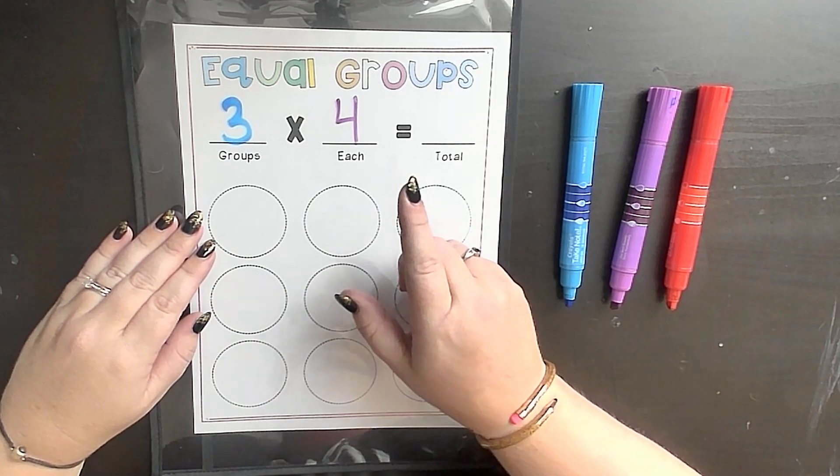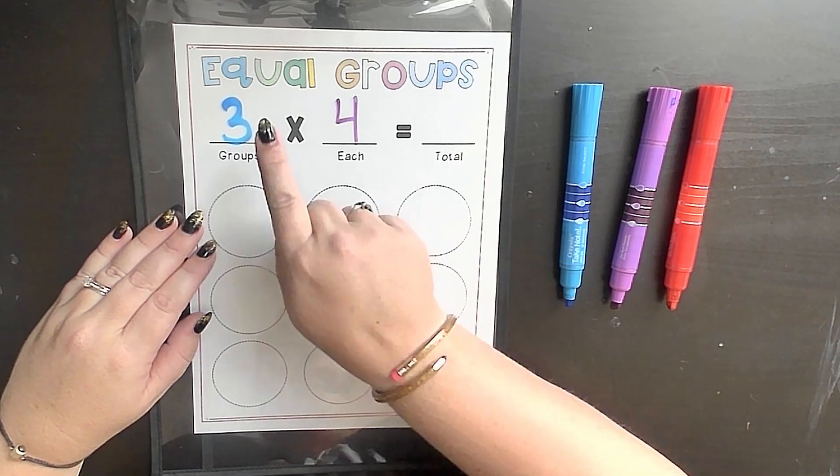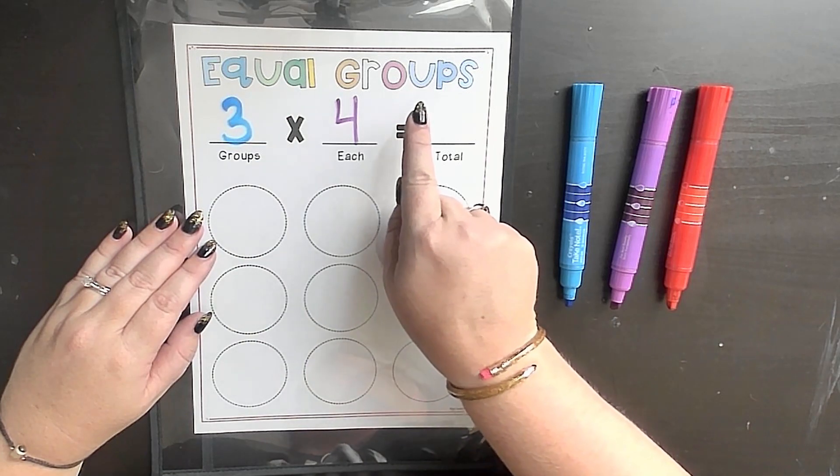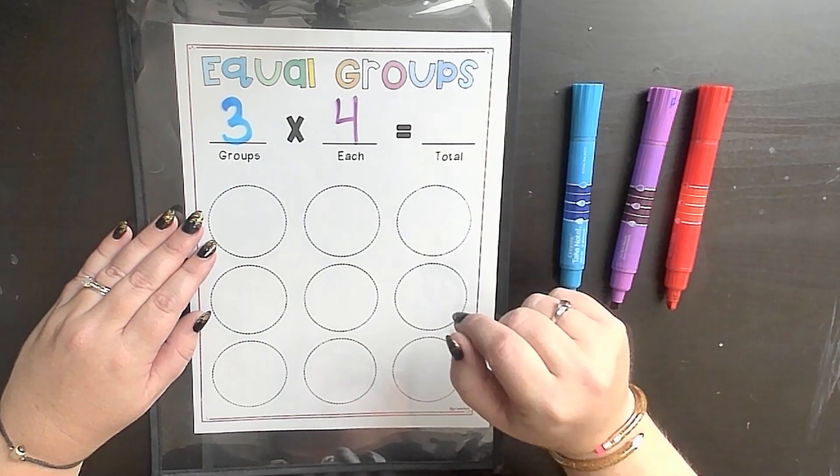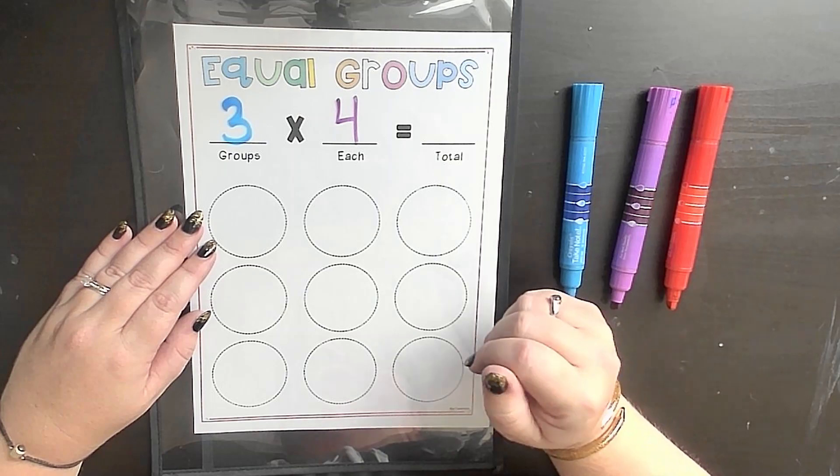Hi friends, it's math time. Today we're learning about our multiplication strategy called equal groups, or as we call it in our third grade classroom, loops and groups. I'm using this math mat to show my model today, but you can use a blank sheet of paper, which I'll show you soon.